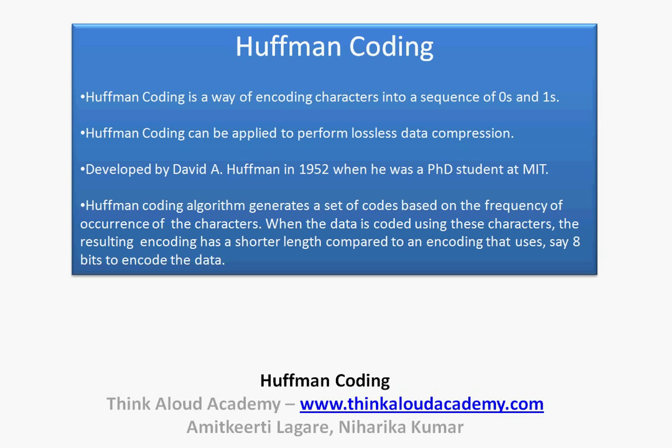Huffman coding is a way of encoding characters into a sequence of zeros and ones. Huffman coding can be applied also to perform lossless data compression, which is a byproduct of the coding mechanism. Huffman coding was actually developed by David A. Huffman in the year 1952, and he did this as a part of his PhD when he was doing it at MIT. Huffman coding, if I were to summarize, it actually generates a set of codes based on the frequency of occurrence of characters.